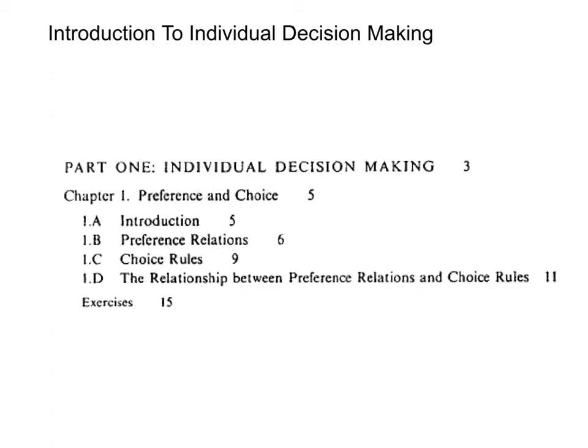In Chapter 1, we have an introduction to the theory of individual decision-making, and we have two approaches. We have a preference-based approach, where we define various preference relations over a set of possible choices and impose some rationality axioms — the completeness and transitivity of the preference relations — and a choice-based approach, where we focus on observed behavior and impose consistency of choice through various axioms of revealed preference.